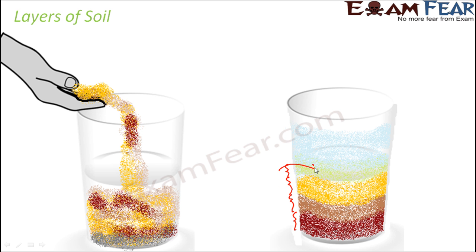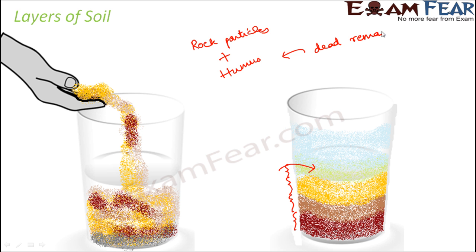If you focus on the topmost layer you will also be able to see some small leaf or plant remains. Now, when talking about the composition of soil, it consists of rock particles and humus. And what is humus? It is nothing but dead remains of plants and animals, so it is quite expected that small parts of plants or animals might also be present there, which becomes evident from the topmost layer.